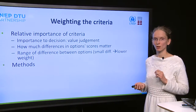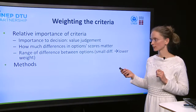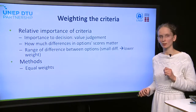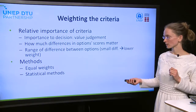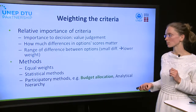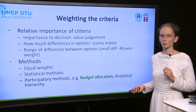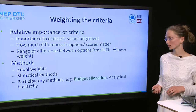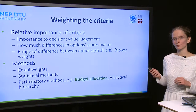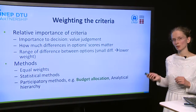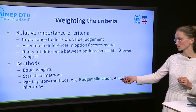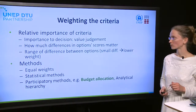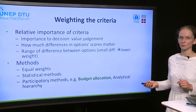There are different methods that can be used for assigning weights. They can simply be assigned equal weights, or either statistical or participatory methods can be used. But because in the TNA it is so important to have the judgment of the decision makers, we suggest that the budget allocation method is used, which is one of the participatory methods of defining weights.